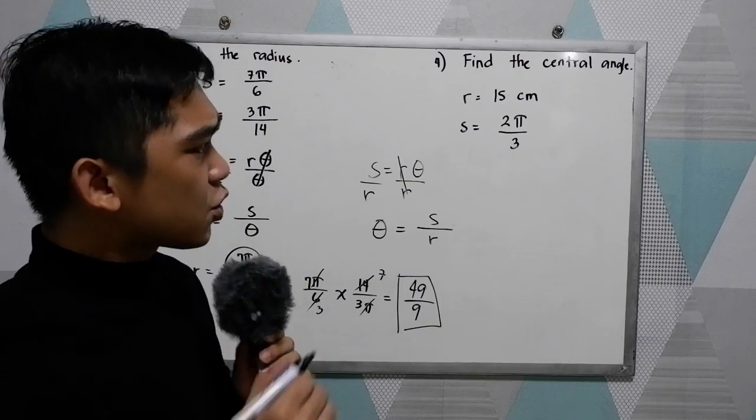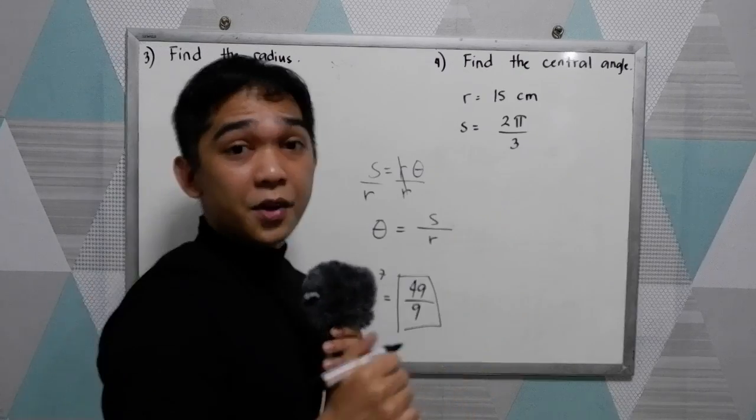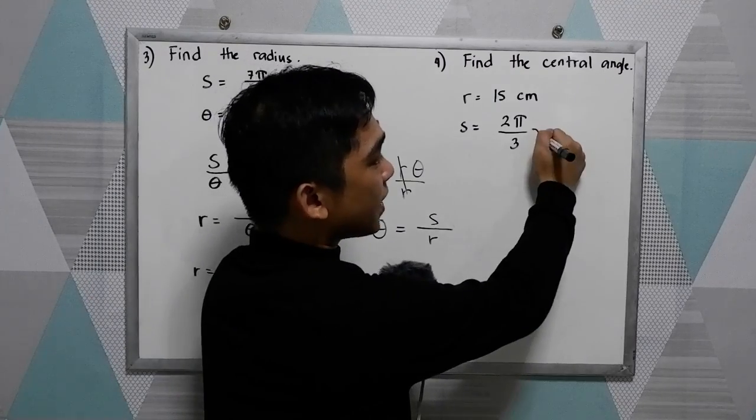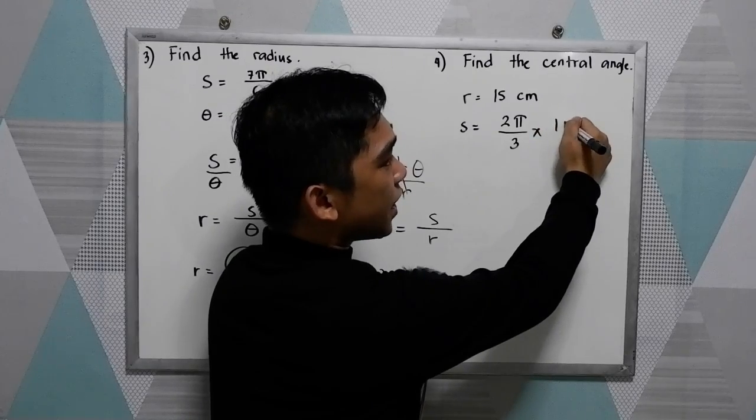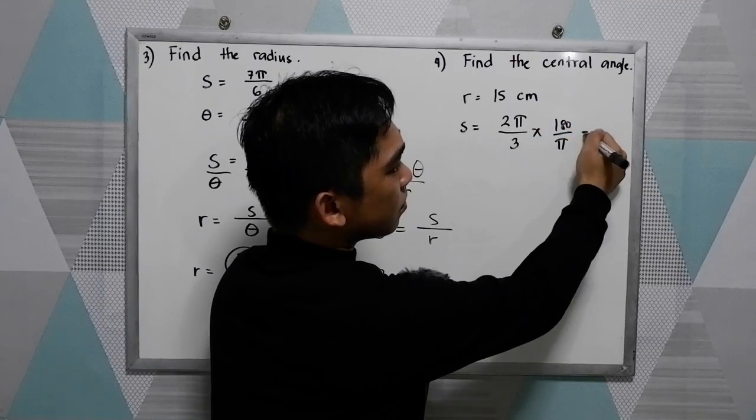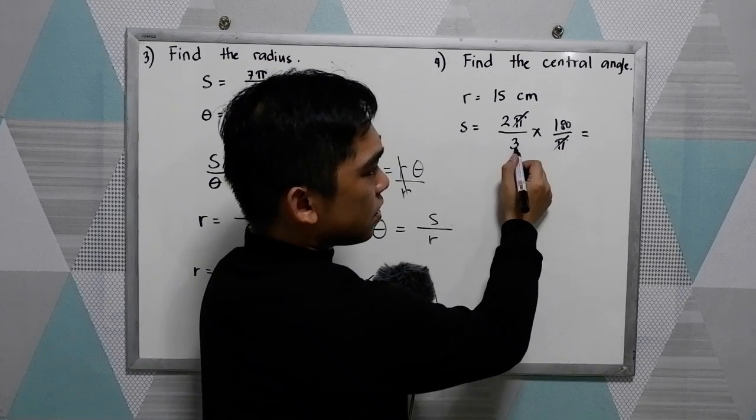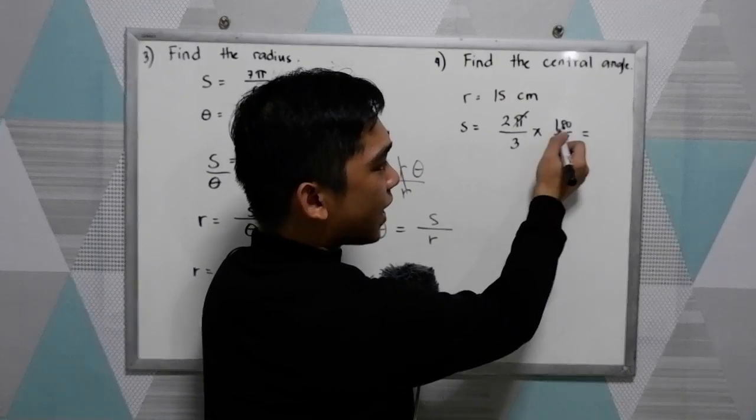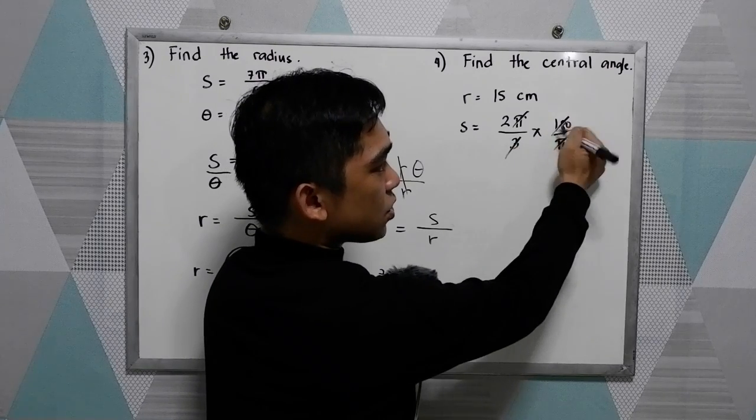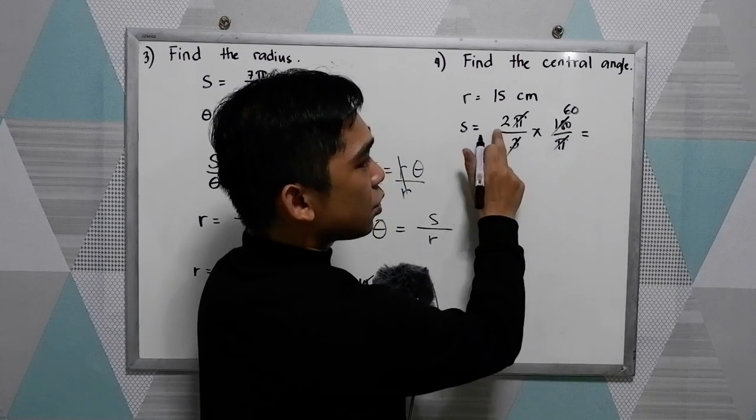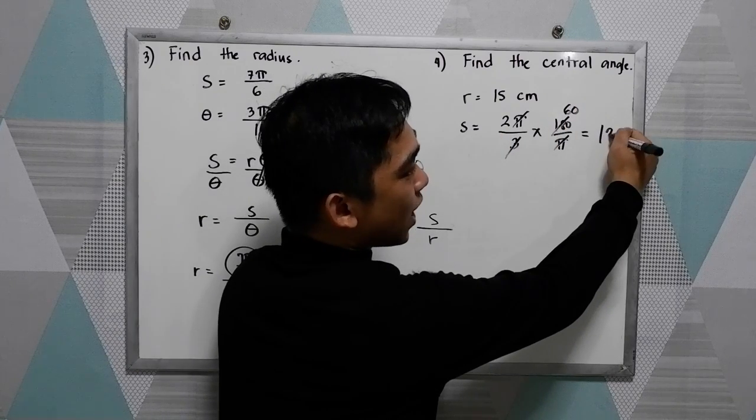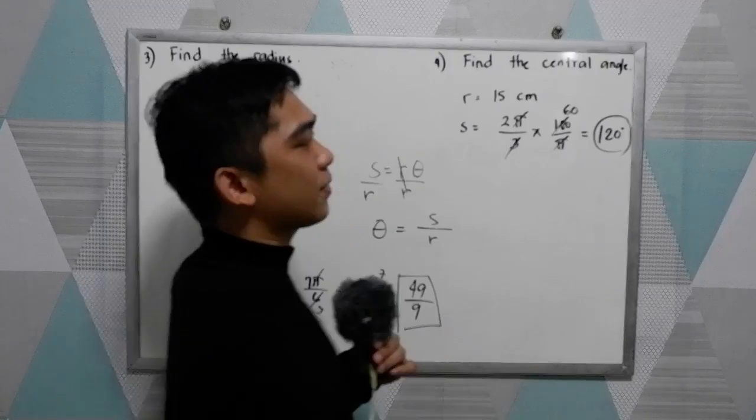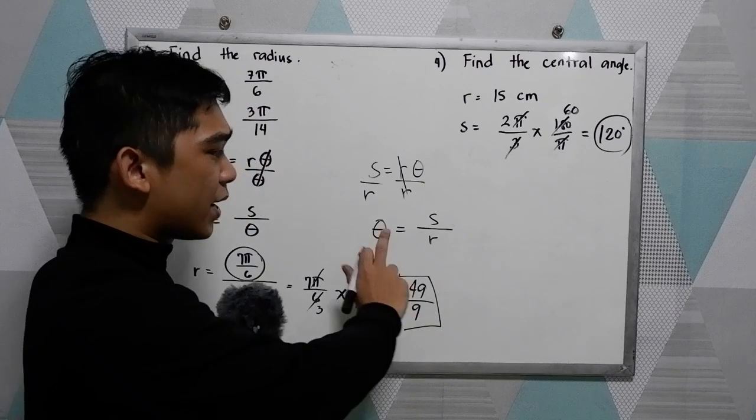Let us first convert this into degree measure so multiply it to 180 over pi. So cancel, divisible by 3 so this will become 60, 2 times 60 that is 120 degrees.